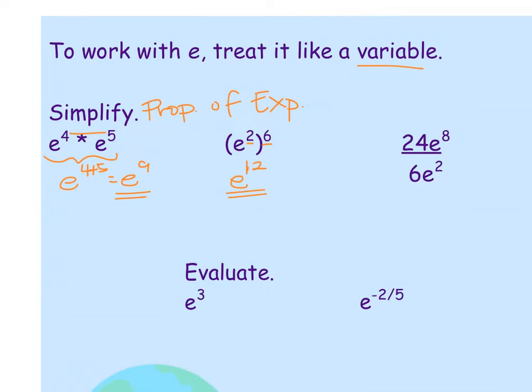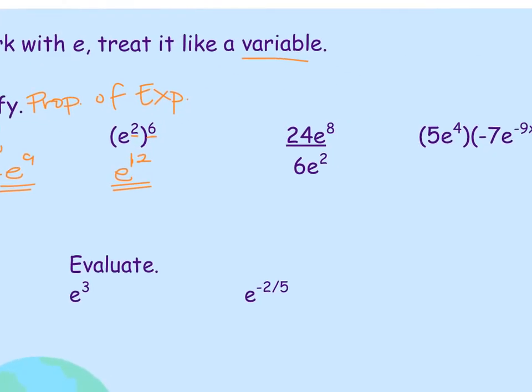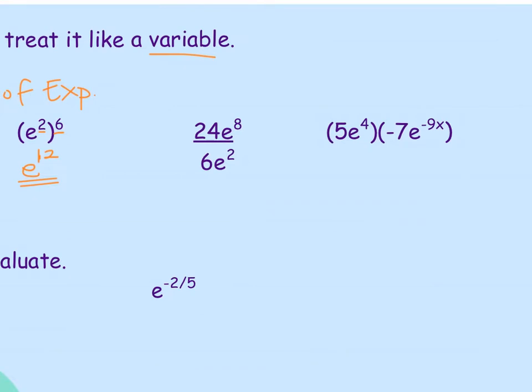In the next example, notice we have coefficients out in front of e. In this case, we're just going to work with those coefficients first. 24 divided by 6, 6 goes into itself once, and goes into 24 four times. That would give us 4.